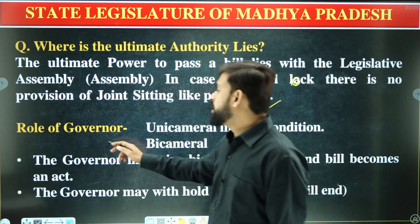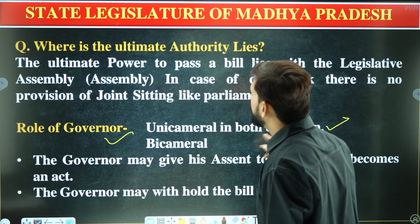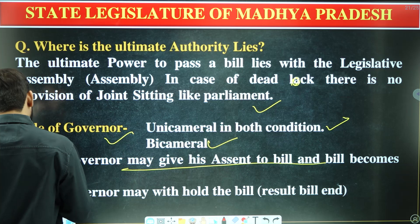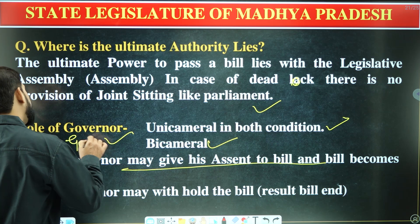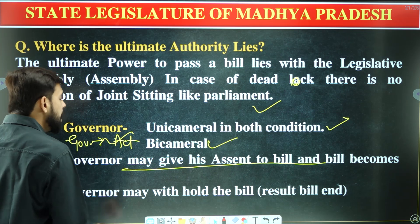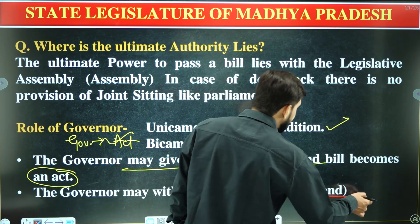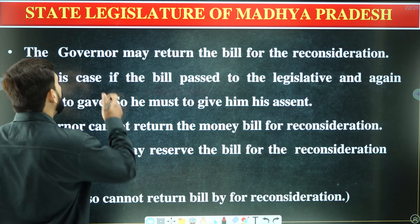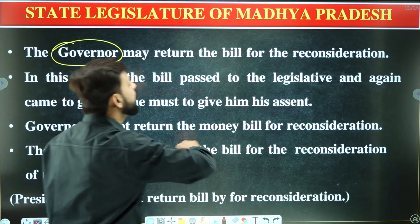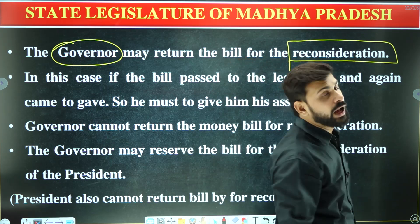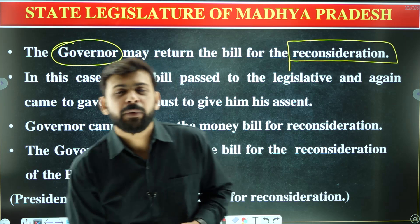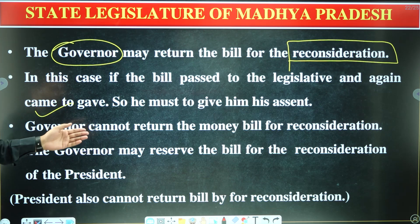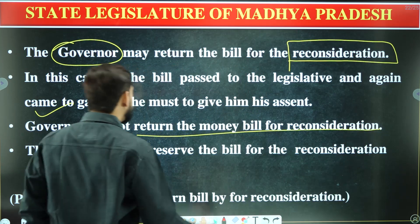Regarding the role of the Governor: the Governor may give his assent to the bill, upon which it becomes an act. The Governor may also withhold assent and reserve the bill for the President's consideration, or return the bill for reconsideration by the legislature. If the bill is passed again by the legislature and sent to the Governor, he must give his assent. However, the Governor cannot return a money bill for reconsideration.